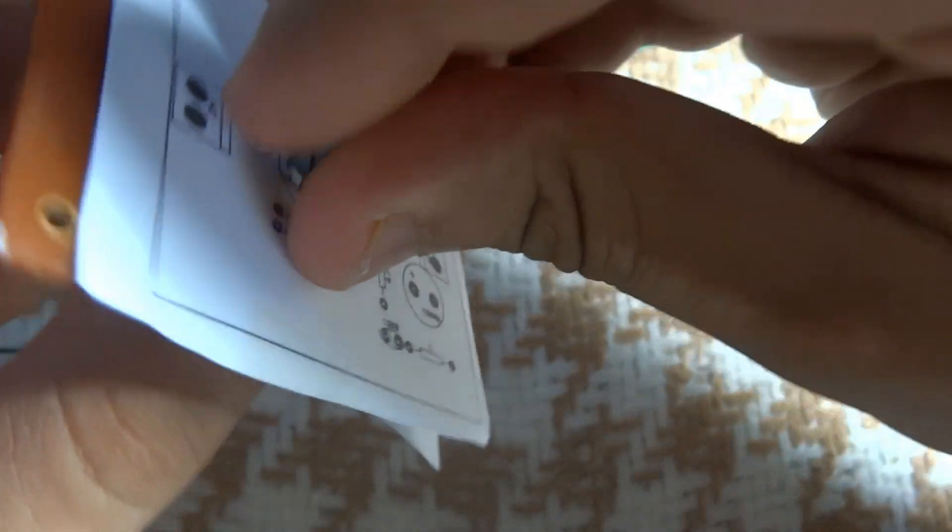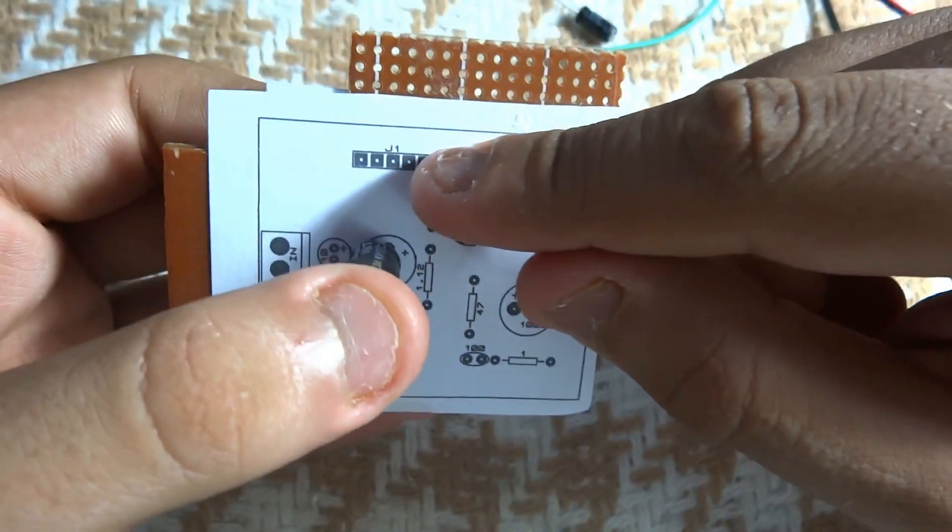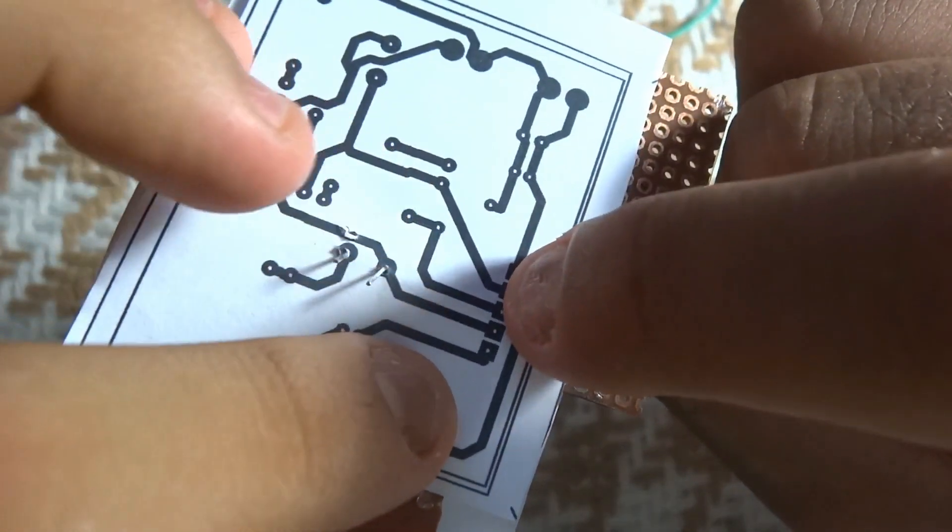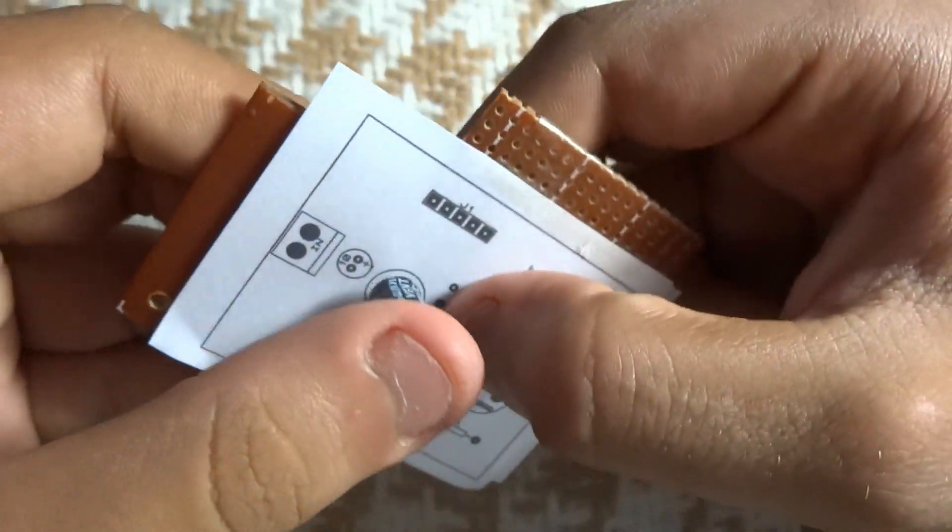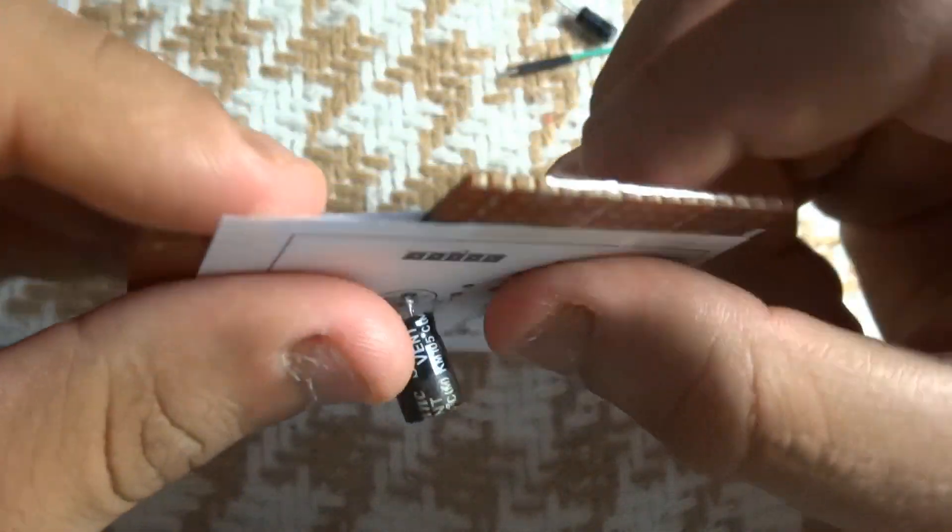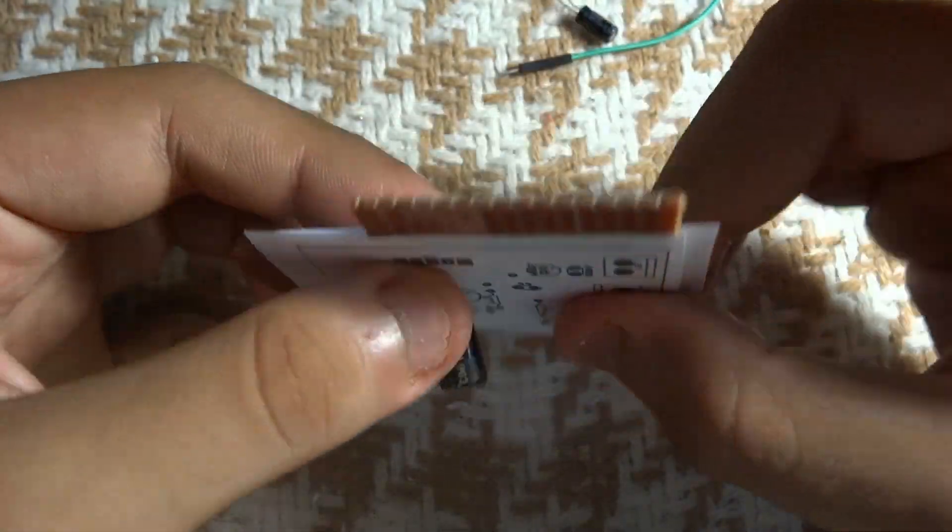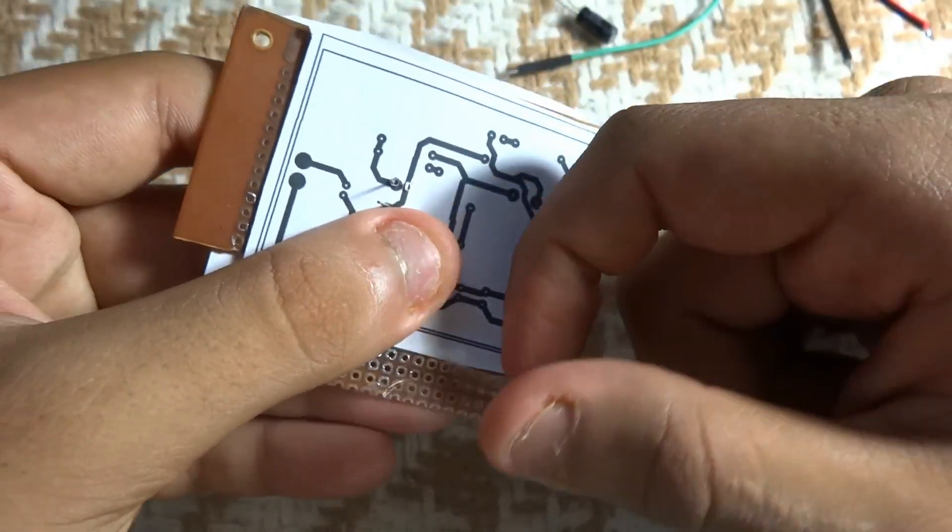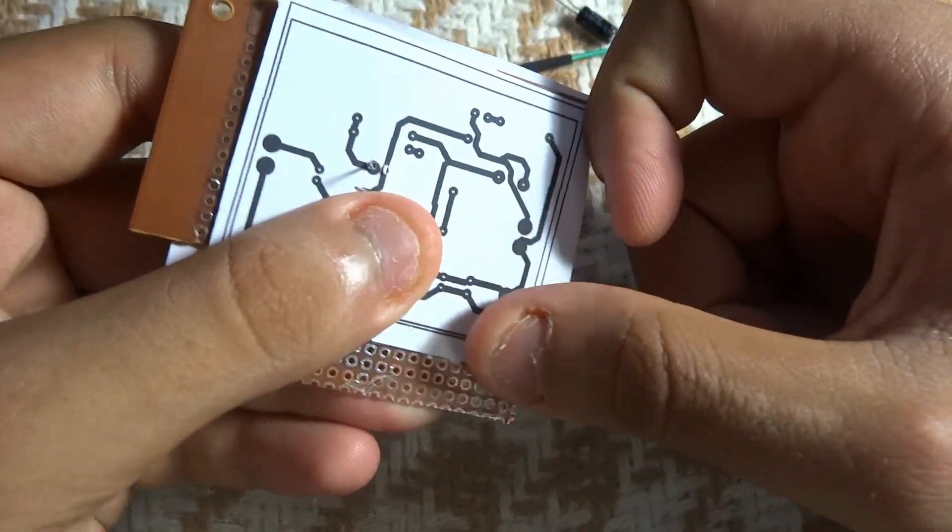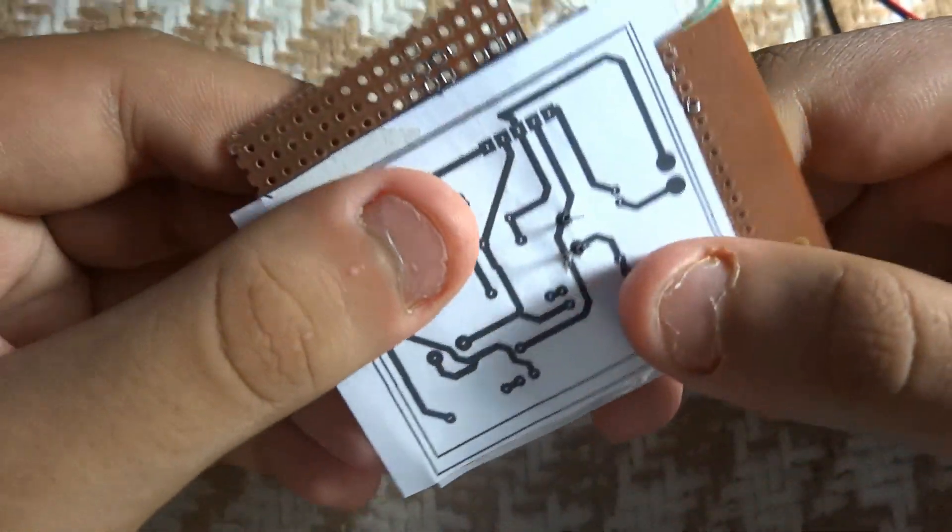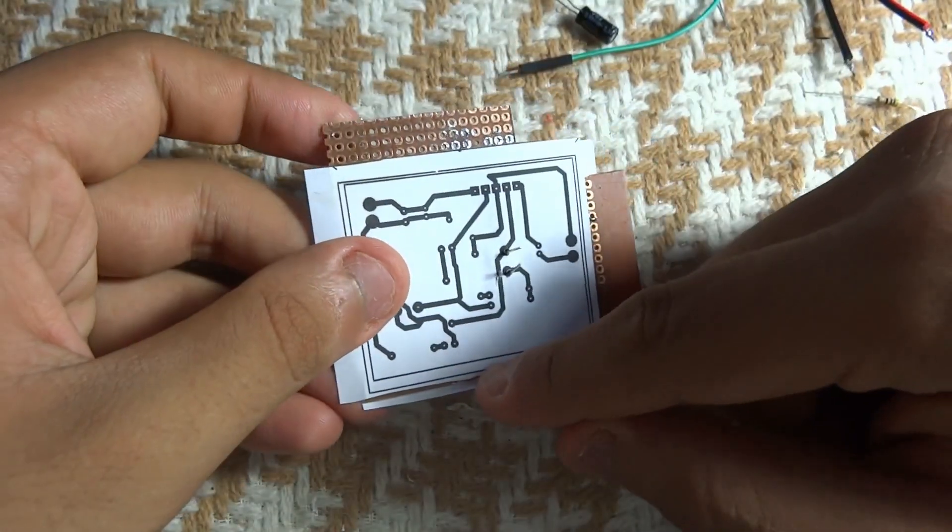As you can see here, the four holes here matches the four holes here and we have one component secured. Now what you need to do is take your tape and secure the bottom layer so it won't move either. So now we are ready. Actually I'm going to add some electric tape here.